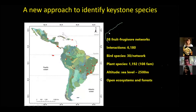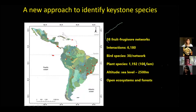What we did was to assemble 38 fruit-frugivore networks across the Neotropics. We sampled from almost the Tropic of Capricorn to the Tropic of Cancer, including the Galápagos Islands, from sea level to the Andes in western South America. We have more than 6,000 interactions, almost 1,200 species of plants across a wide diversity of families — 31 networks from forests and 7 from open ecosystems — covering a wide diversity of ecosystems and geographic locations.